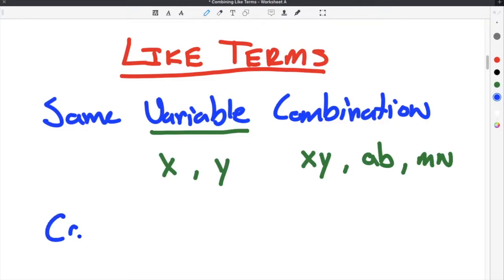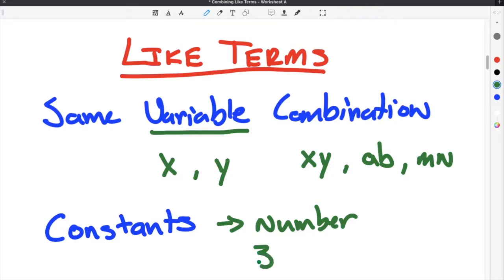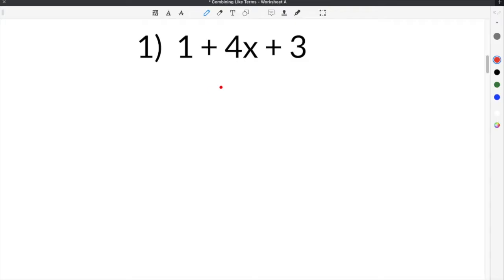The other type of like terms are what are called constants. Now a constant is just a fancy math way of saying any plain old regular number. So this would be anything, so anything that's a number. So it could be like 3 and 5 and 11. Those are all going to be like terms and anytime you have numbers in your problem or in your expression, they are automatically like terms and you can combine them. Let's jump to the first problem on our combining like terms worksheet.